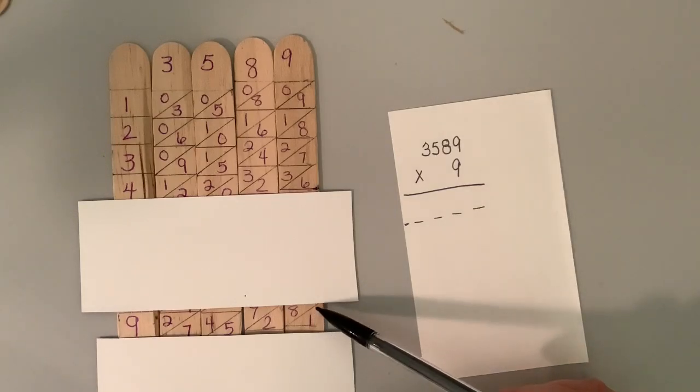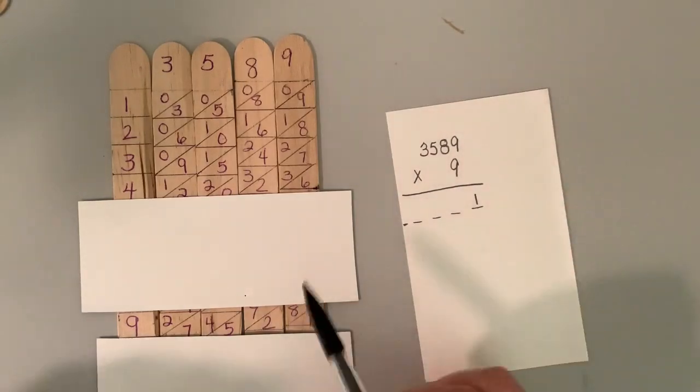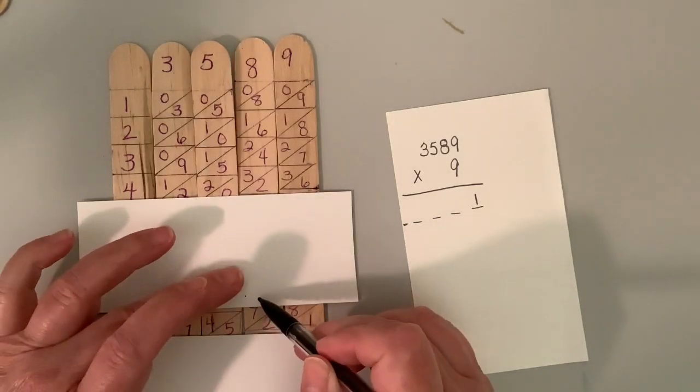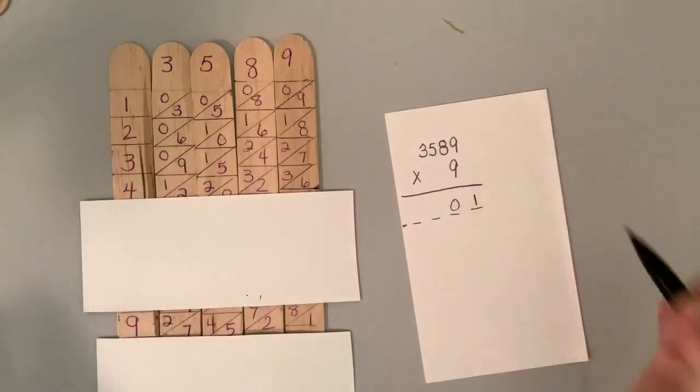So the first diagonal is one. So it's going to be one. My second diagonal, I have eight plus two. So that means I have 10 tens, which is really a hundred. So I have to carry my one over here, but I have to put zero tens because I don't have any tens.